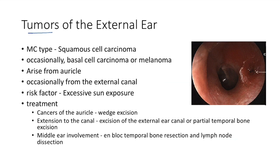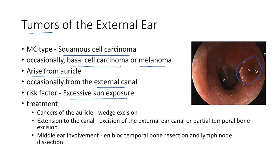Tumors of the external ear: the most common type is squamous cell carcinoma; occasionally basal cell carcinoma or melanoma. These tumors usually arise from the auricle, occasionally from the external ear canal. The risk factor is excessive sun exposure.